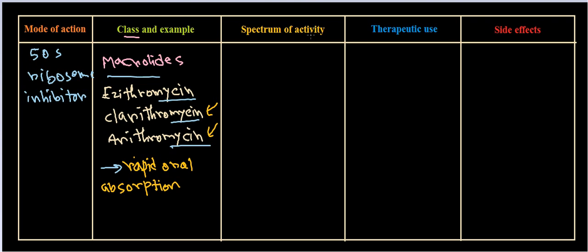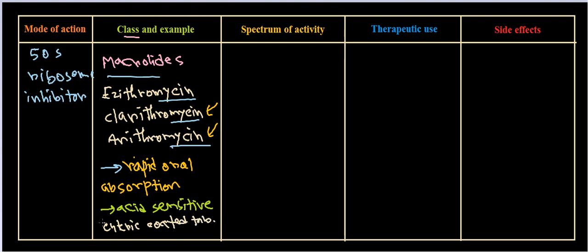However, clarithromycin and erythromycin are acid sensitive, meaning they can be degraded inside the GI tract. So if we need to take them via the oral route, we need to coat them so they can survive the gastric acid. They are usually administered as enteric coated tablets to survive the gastric juice.